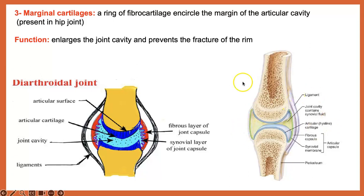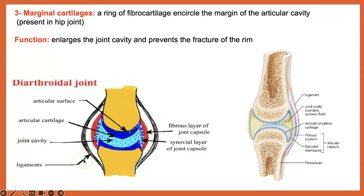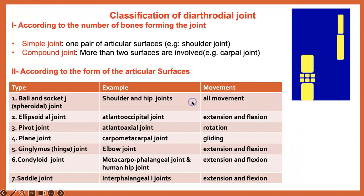Looking at the diagram for the synovial joint, you can see the two articular surfaces of the two bones, with articular cartilage covering them. We have the joint capsule with two layers — outer fibrous and inner synovial — and we have the joint cavity filled with synovial fluid. There is also a ligament inside the joint, which is an accessory structure.